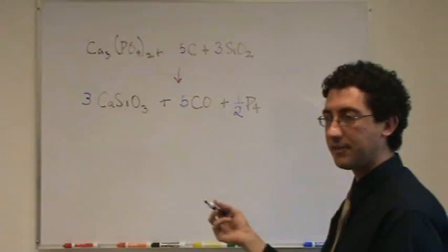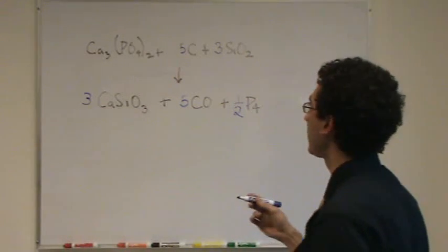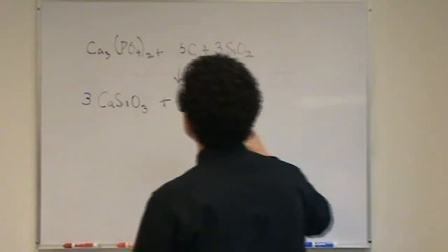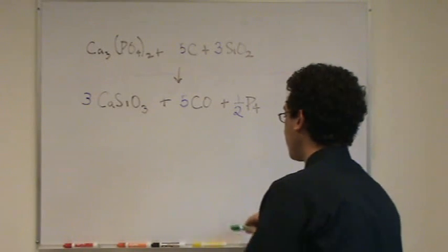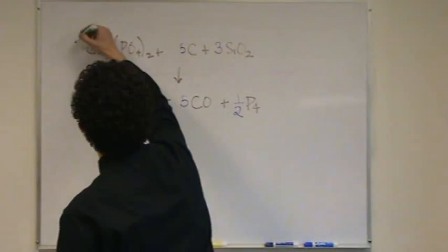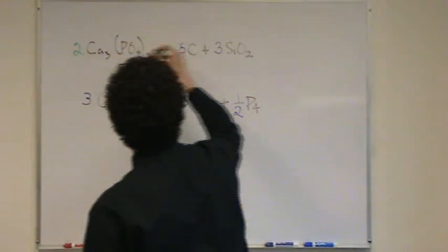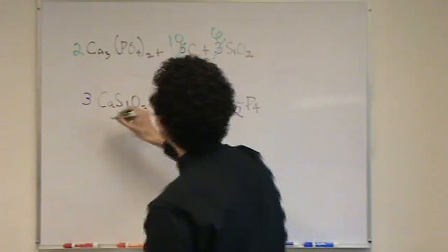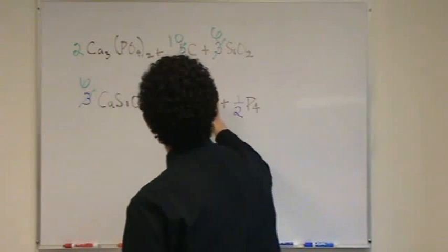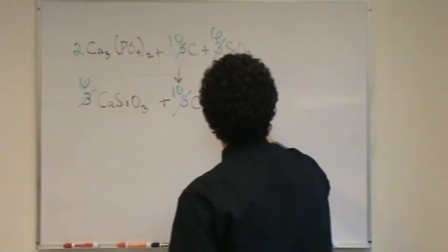Only thing I'll fix now is make sure everything's a whole number. So multiply through by 2. So I'll write that in a different color. I'll write it in green. I want a 2 there, 10, 6, 6, 10, and a 1.